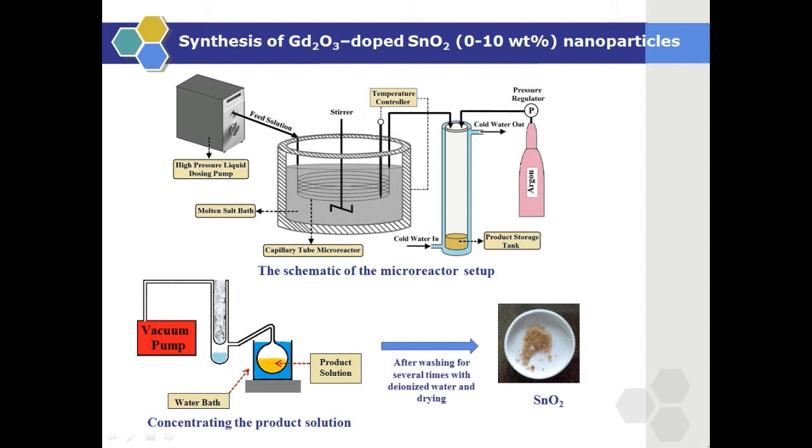Therefore, decomposition of urea, nucleation, and growth of nanoparticles happen rapidly in microreactor, which results in synthesis of small nanoparticles with narrow size distributions. We separate the highly dispersed nanoparticles by applying vacuum evaporation and centrifuge. After washing nanoparticles for several times, we dry samples and calcine them in air.